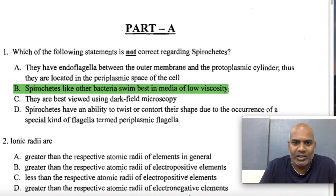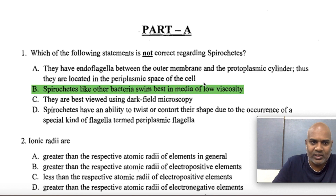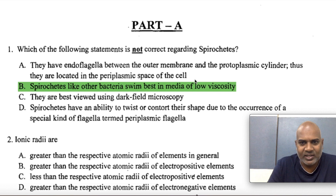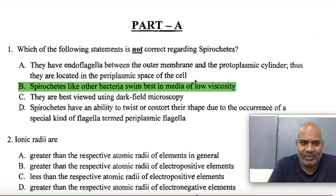Which of the following statements is not correct regarding the spirochetes? The answer is A: they have endoflagella between the outer membrane and protoplasmic cylinder, located in the periplasmic space of the cell. Spirochetes do have endoflagella present inside the periplasmic space. It originates from the outer membrane but cannot come out from the cell wall — that's why they have endoflagella, also called the axial filament.